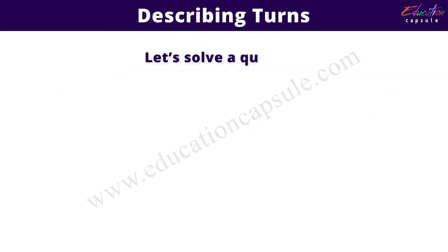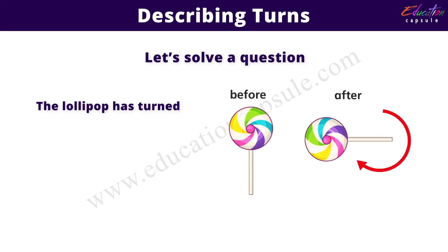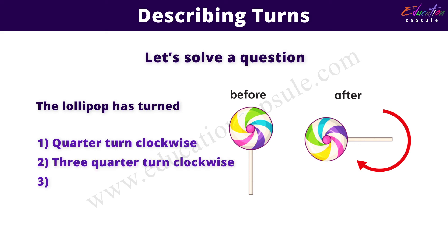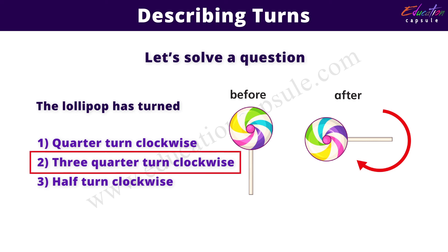Let us solve a question here. The lollipop has turned. Is it a quarter turn clockwise? Is it a three quarter turn clockwise? Or is it a half turn clockwise? By looking at this figure, we can see that the lollipop has turned three quarter turns clockwise. Hence option two is correct.